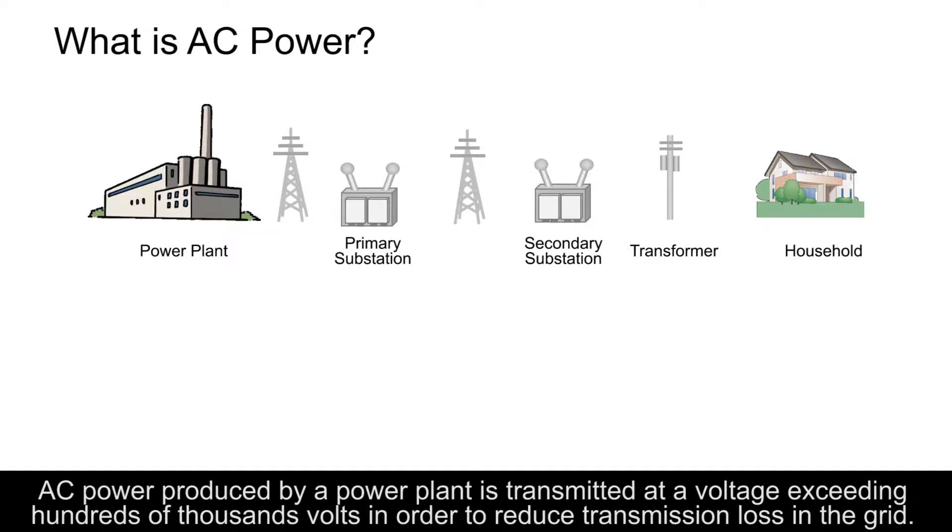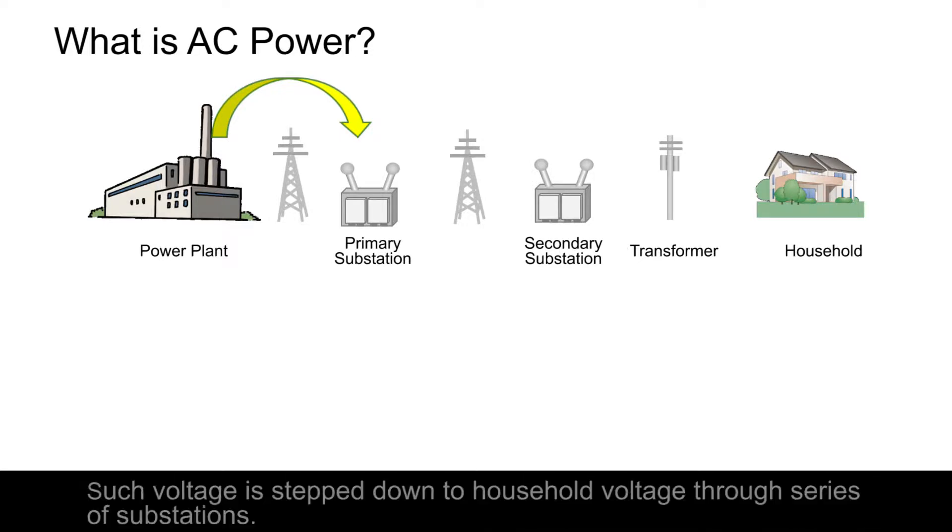AC power produced by a power plant is transmitted at a voltage exceeding hundreds of thousands of volts in order to reduce transmission loss in the grid. Such voltage is stepped down to household voltage through a series of substations.